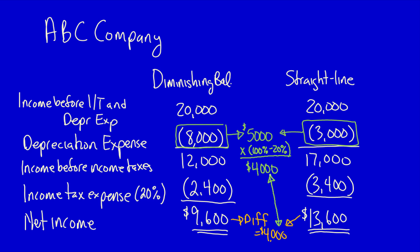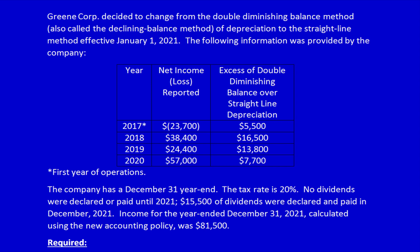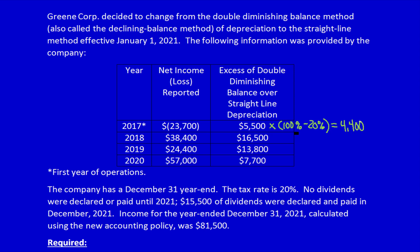Going back to the question, the third column is the additional depreciation expense: $5,500 in 2017. Multiplying by (100% − 20%) gives the after-tax change in net income from switching to straight line. The change for 2017 would be $4,400 higher income, which reduces the net loss. Instead of a net loss of $23,700 using double diminishing balance, the net loss under straight line would only be $19,300 — that's $23,700 less $4,400 — because the lower expense causes less of a loss.